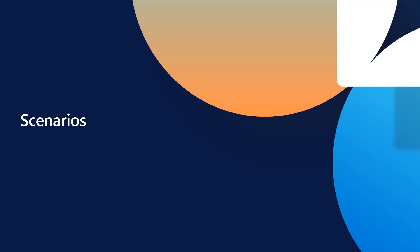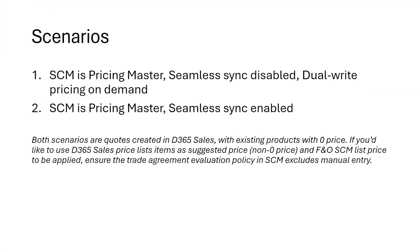Let's now see in action two simple scenarios with dual-write on-demand and dual-write seamless sync. For both scenarios, Supply Chain Management is the pricing master, and in Sales the price of the product we'll be using is zero. If you'd like to store non-zero prices in Sales and use those as suggested prices but still apply the F&O list price, discounting rules, and so on, you need to review the trade agreement evaluation policy in Supply Chain Management to exclude manual entry. Otherwise, the non-zero Sales-provided prices would apply.